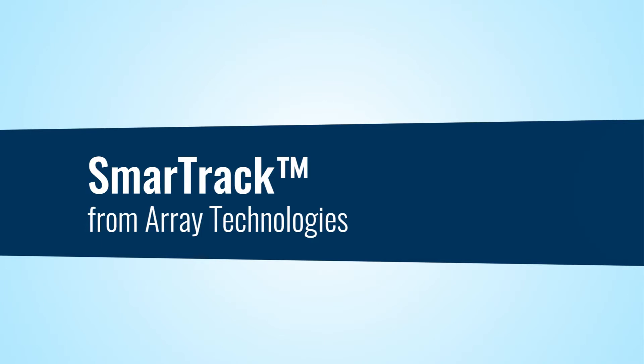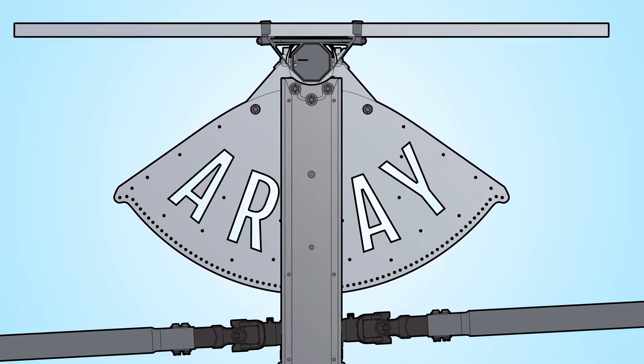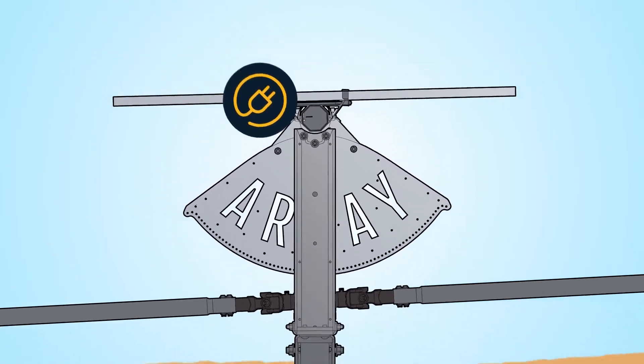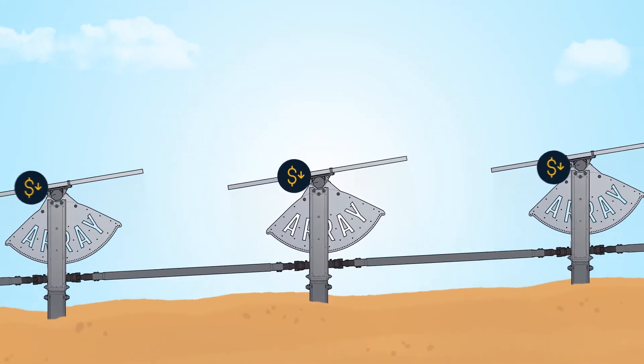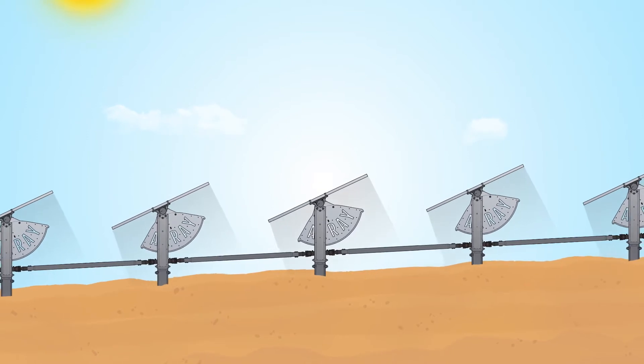SmartTrack from Array Technologies is a software platform that intelligently adjusts our DuraTrack HZ single-axis tracker to the most efficient module angles to boost energy output, lower levelized cost of energy, and overcome unique terrain challenges for utility-scale PV power plants.